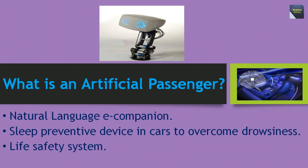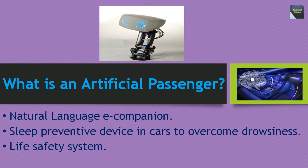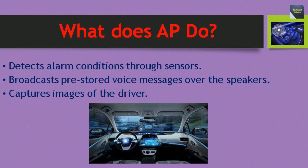What is an artificial passenger? It is a natural language e-companion and sleep preventive device in cars to overcome drowsiness — a life safety system. What does AP do? It detects alarm conditions through sensors, broadcasts pre-stored voice messages over the speakers, and captures images of the driver.